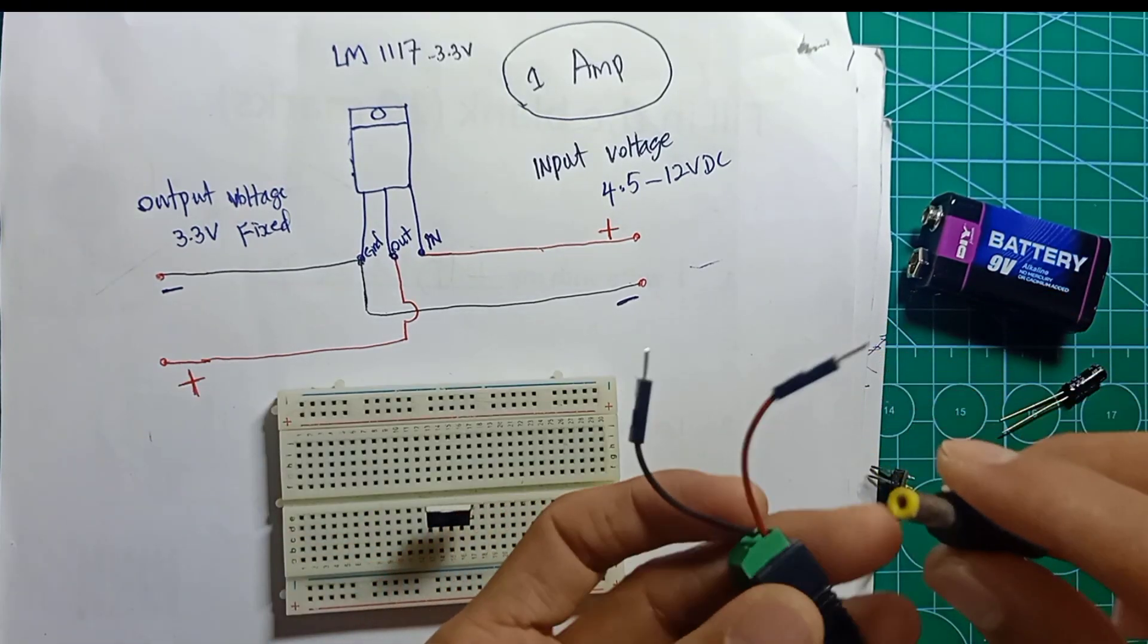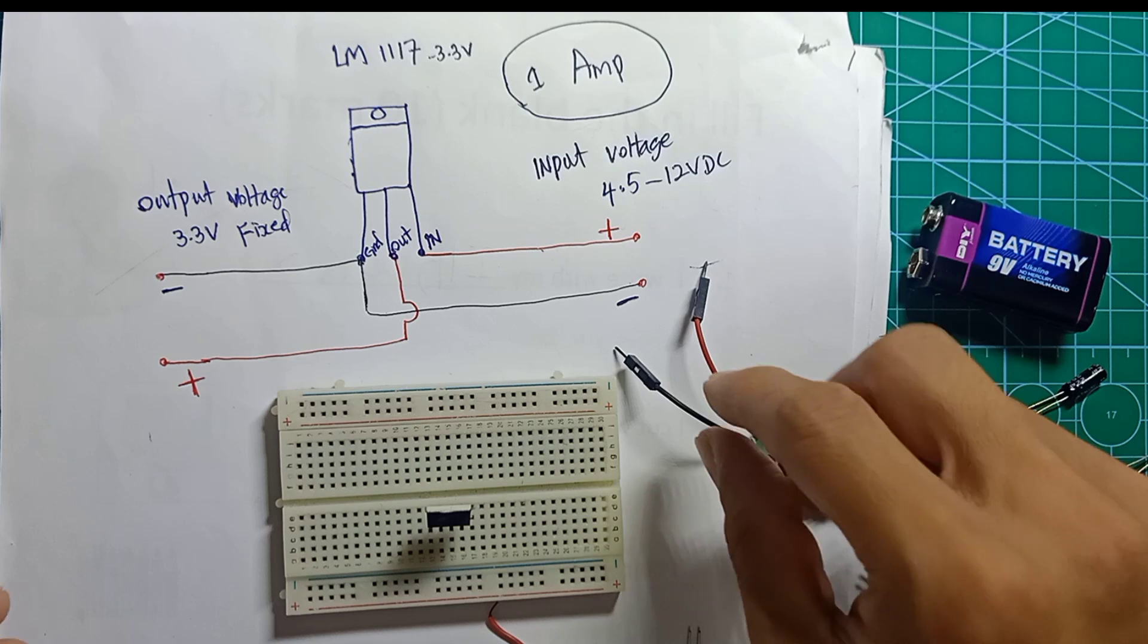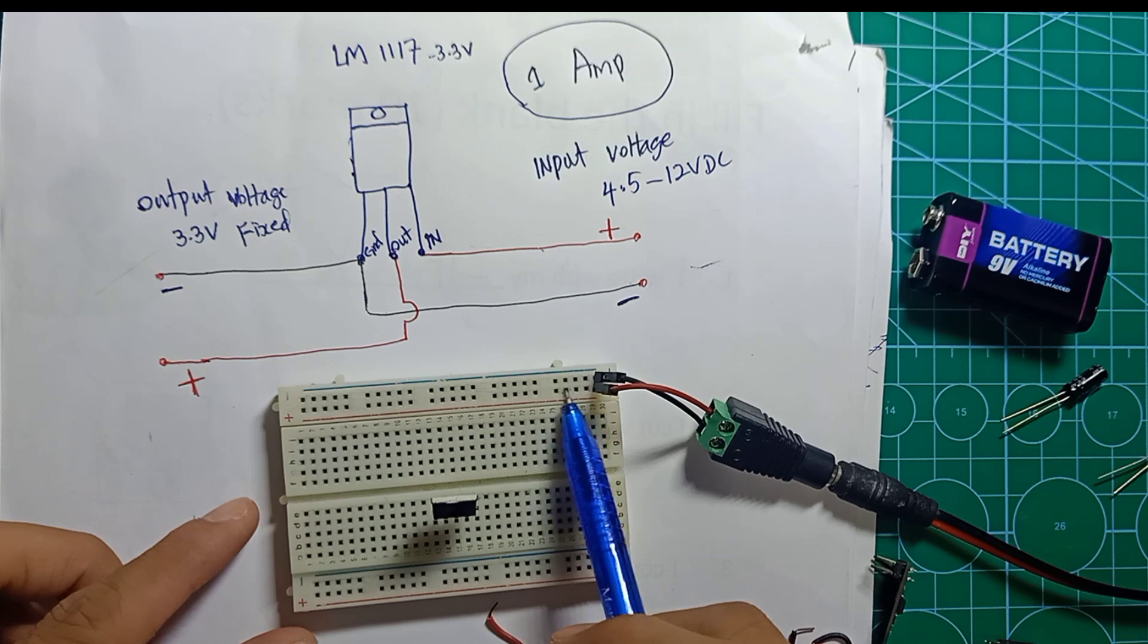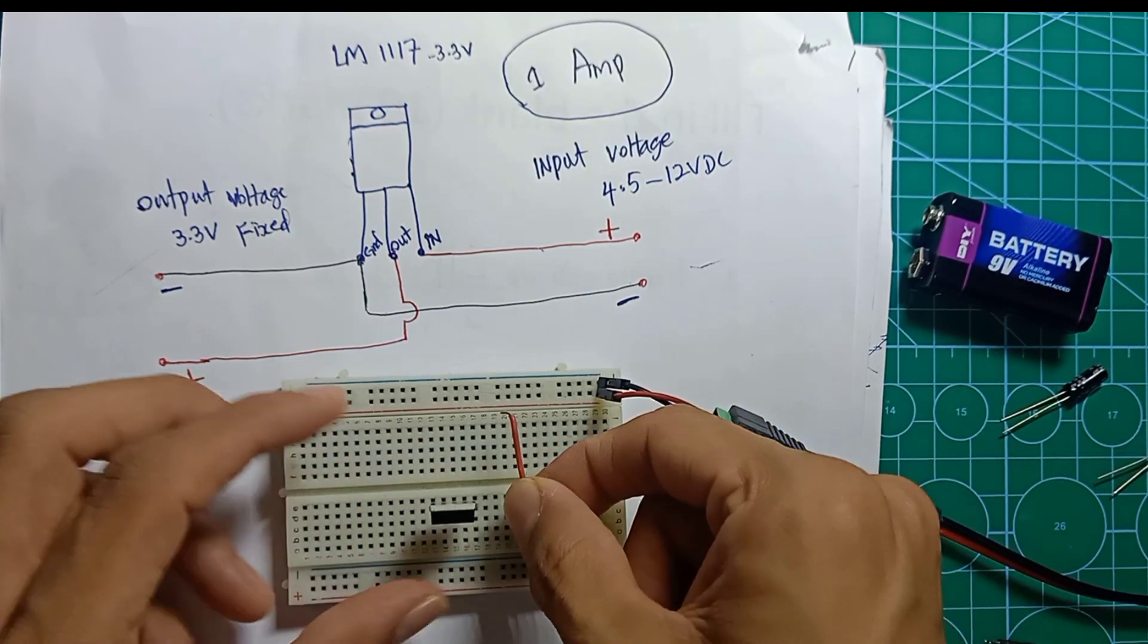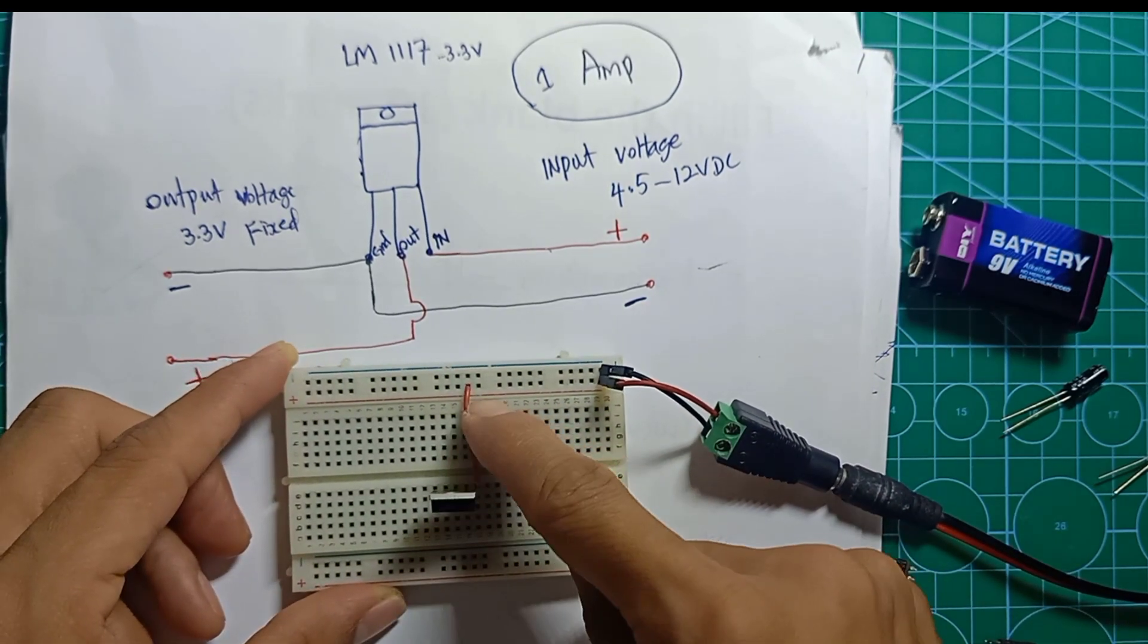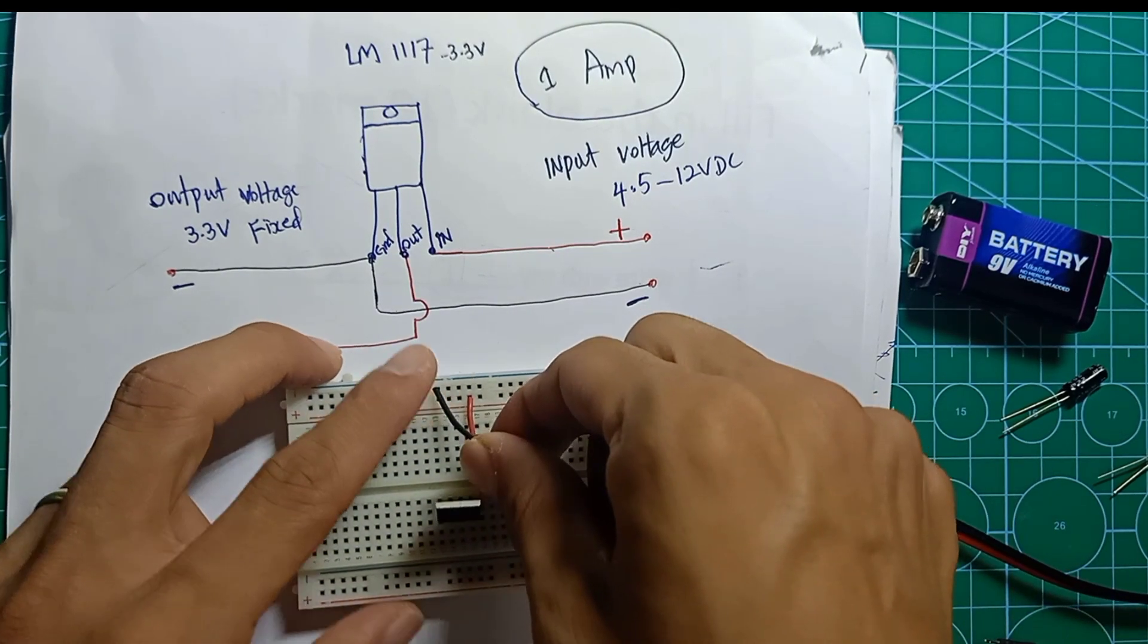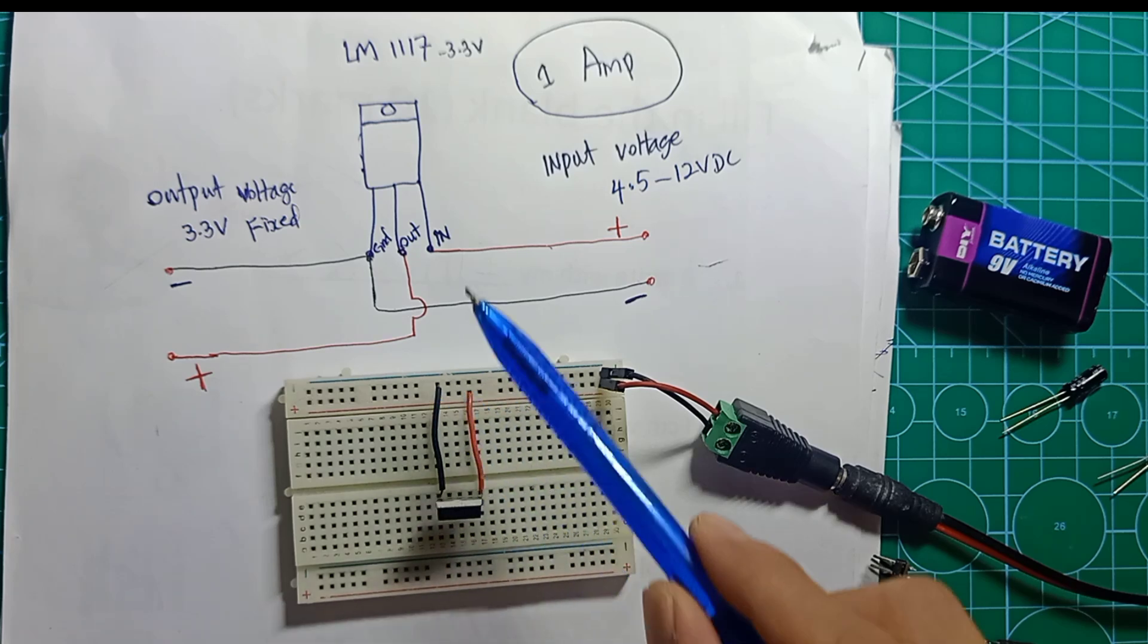I will place it right here on the breadboard. I'm going to use a 12 volt power supply. This is my 12 volt power supply - 12 negative, 12 positive. Now this line is 12 positive and this line is 12 negative.